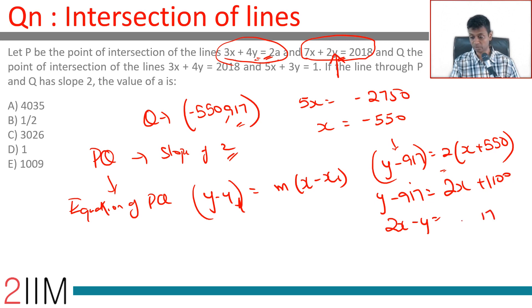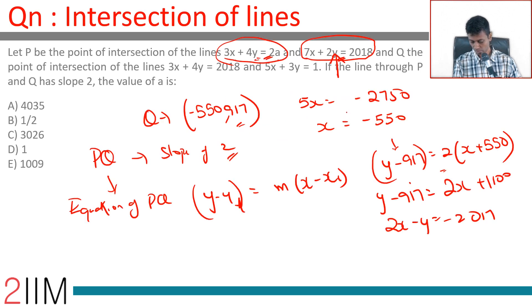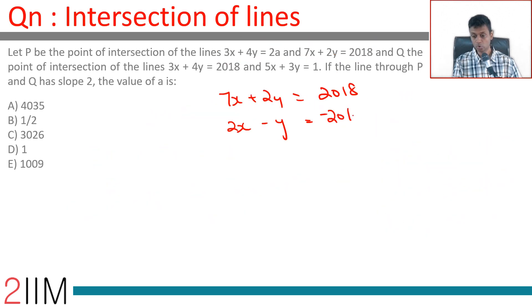We need to solve 7x + 2y = 2018 and 2x - y = -2017 and then get values of x and y which will be the coordinates of P.